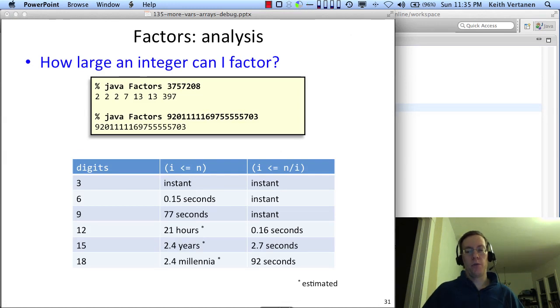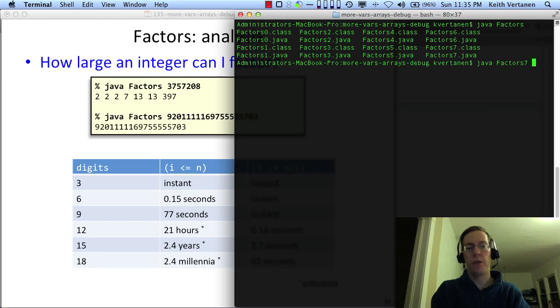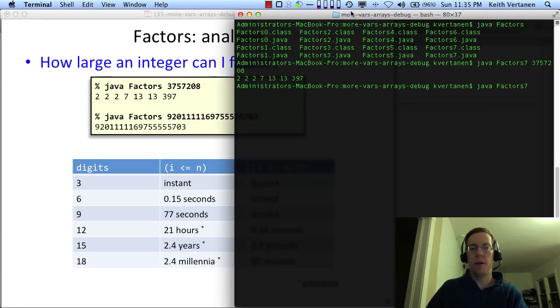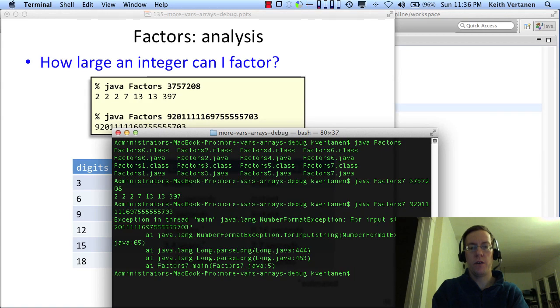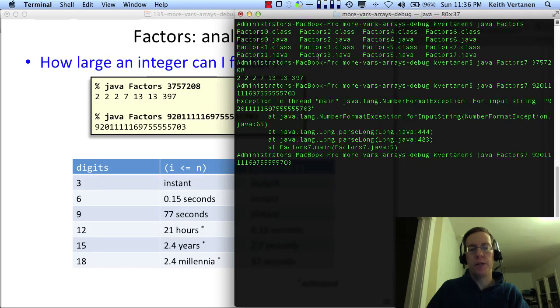How big of a number can I factor? Well, I could pull it up, we could run these live. Here's my terminal window. And I think my final version is a file called factor7. I can run 757208. That was reasonably quick. That's a big number. I'm going to have to paste it out. Oops, I guess I can't paste. I guess I'm just going to have to type it out. Alright, we'll put it down there. 92011111697555555703. Oops. I think I mistyped it. What did I mistype? I got one too many fives, huh? It's faster, but it's not super fast.